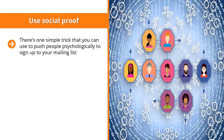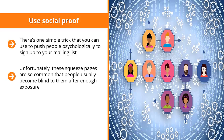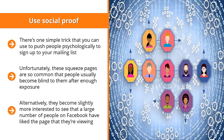Use social proof. There's one simple trick you can use to push people psychologically to sign up to your mailing list. We've all seen squeeze pages before — typically there's an email field, a call to action, and a submit button, and maybe a nice-looking graphic on the side. Unfortunately these squeeze pages are so common that people usually become blind to them. However, people do pay attention when they see that their Facebook friends have signed up to the list, or that a large number of people on Facebook have liked the page they're viewing.